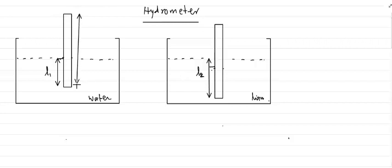The hydrometer has a bulb and a certain weight acting downward. We first place it inside water and find the length L1 to which it gets immersed. This immersed length L1 is measured when placed in water, because we know the density of water is 1 gram per centimeter cube — a liquid of known density.